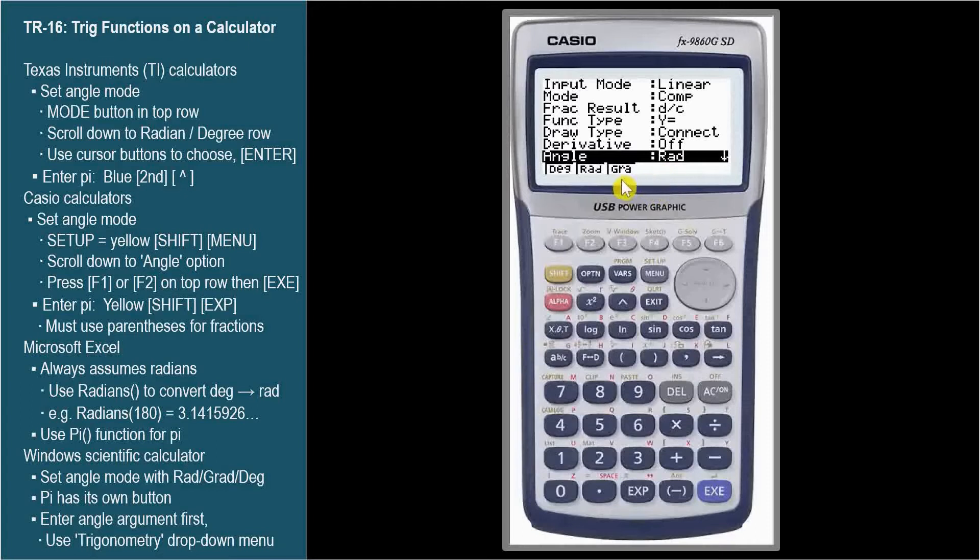GRA stands for gradians. There are 100 gradians in a right angle, so 400 in a full circle. Not used much, and we won't mention it again.